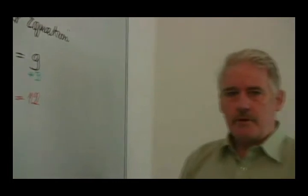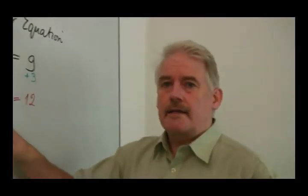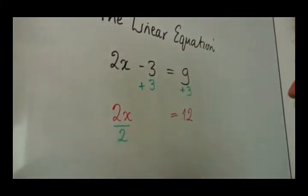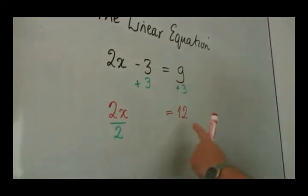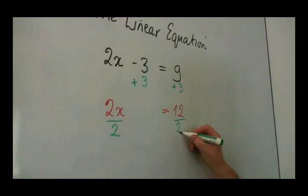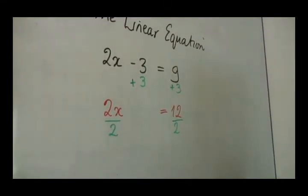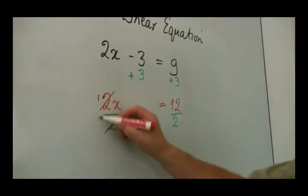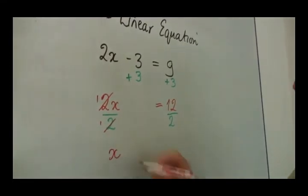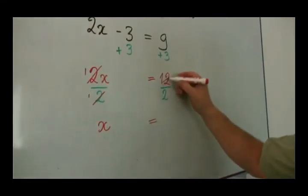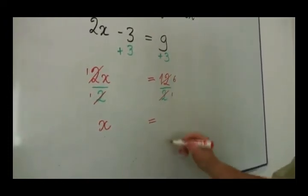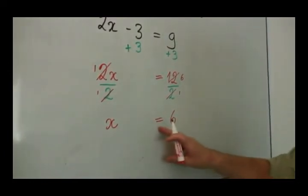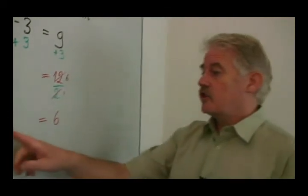Now I've got to do the same to both sides. I've got 2x here — what happens if I divide by 2? If I do it this side, I must do it this side: divide by 2. So what do I get? Well, 2x divided by 2 — I can cancel those two — I get x. And on this side, 12 divided by 2 is 6. So the result is that x is equal to 6. This is the solution to this equation.